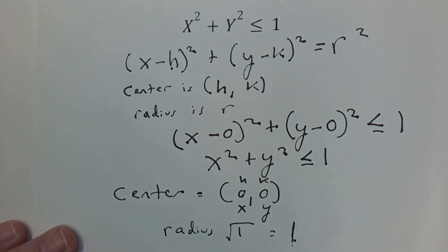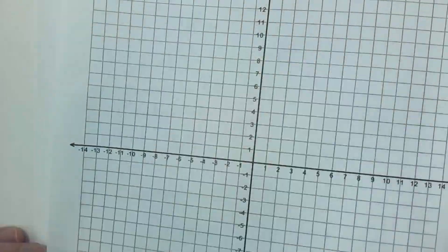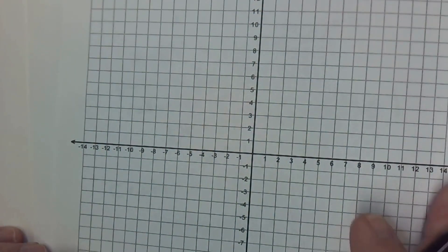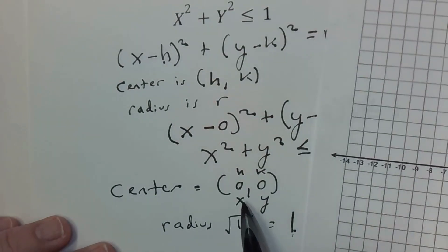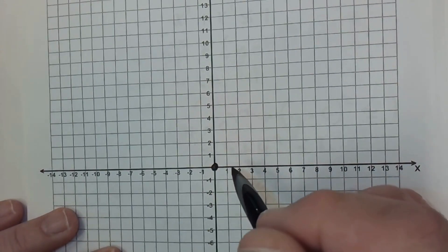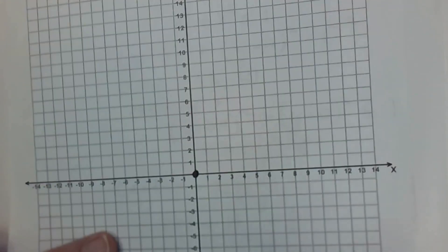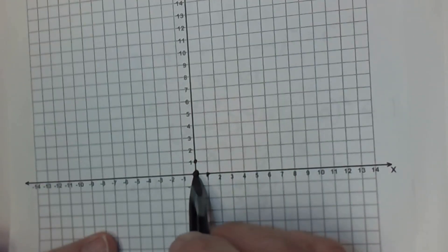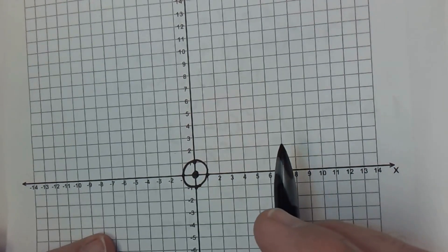We can start graphing this. So I'm going to get my graph paper here and turn it right side up, and here's our center at (0, 0). So I'm going to put a little point here at the center, and our radius is 1. That means I'm going to go out 1 here, I can go out 1 here, go out 1 here, and go out 1 this way. And then I can just connect those dots to make our circle.